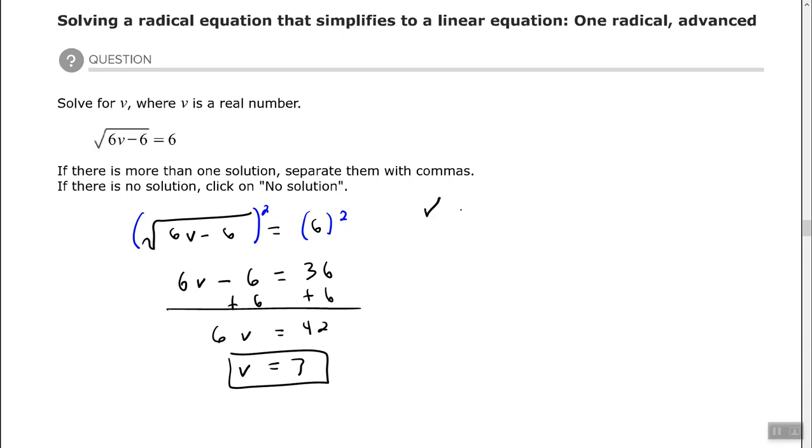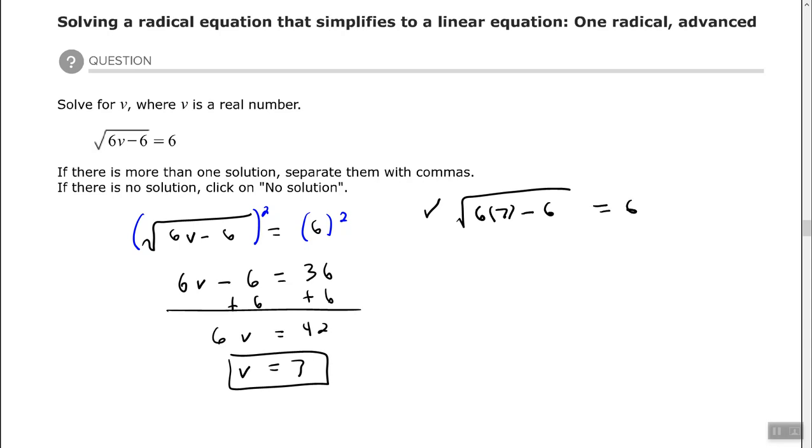And again you can check that out. 6 times 7 is 42. 42 minus 6 is 36. The square root of 36 does equal 6.